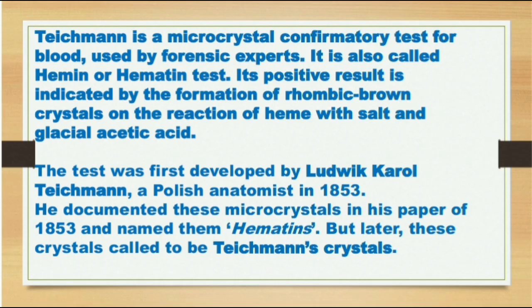Teichmann is a microcrystal confirmatory test for blood used by forensic experts. It is also called the hemin or hematine test. Its positive test is indicated by the formation of rhombic brown crystals on the reaction of heme with salt and glacial acetic acid. The test was first developed by Ludwig Karol Teichmann, a police anatomist, in 1853.